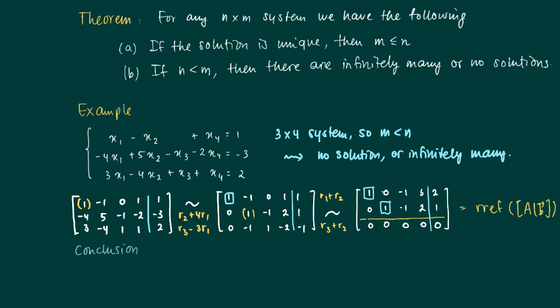What can we conclude? We do not have an inconsistent system; we have a consistent system with two pivots and one row of zeros. We have two free variables in the third and fourth columns, so the free variables are x₃ and x₄.